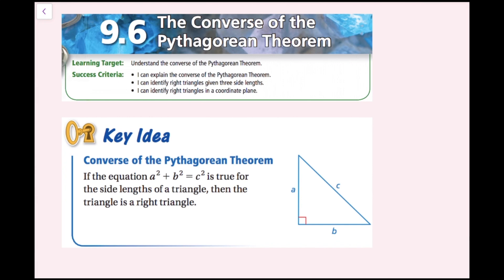In this lesson we're going to be using the converse of the Pythagorean theorem. The success criteria is: I can explain the converse of the Pythagorean theorem, I can identify right triangles given three side lengths, and I can identify right triangles in a coordinate plane.